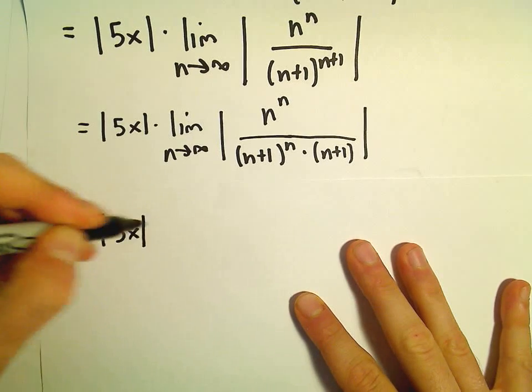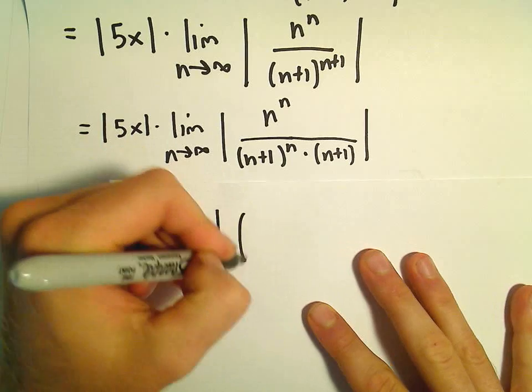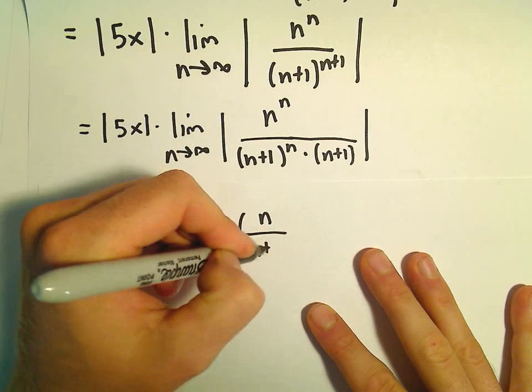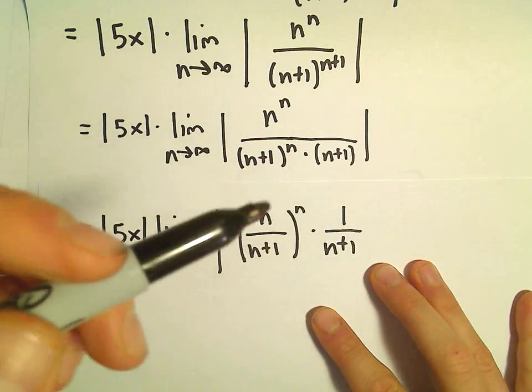So that's the absolute value of 5x, the limit as n goes to infinity, then we could write that as n over n plus 1 all raised to the n power times 1 over n plus 1.